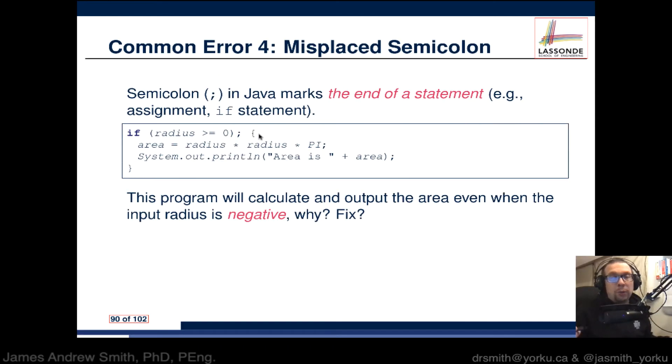The program will calculate and output an area even when the input radius is negative. Wait, that's not what we're trying to do. What's going on? Well, it's got this extra semicolon you shouldn't have. Shouldn't you always have semicolons ending things? The answer is no, not quite.